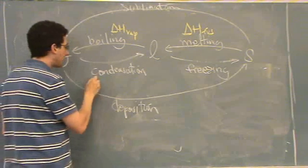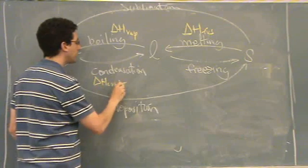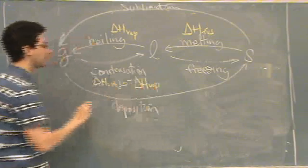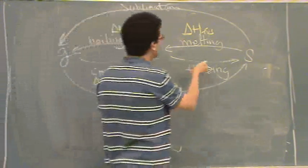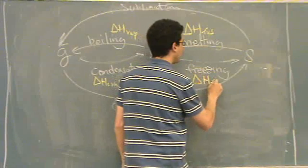Condensation, you could call that the delta H of condensation, or you could just say minus delta H of vaporization. Because it's the opposite. So it's just really negative of this delta H. And this, you could call it, we'll just say simply minus delta H of fusion.